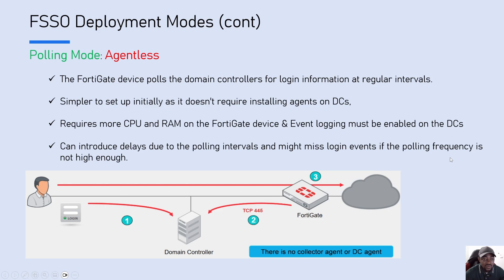The third mode is also a polling mode but agentless, meaning there is no DC agent and no collector agent to install. FortiGate itself comes to the domain controllers and pulls the information directly. In this mode, the FortiGate device requires more CPU and RAM to perform this activity. You also need event login to be enabled on the domain controllers.